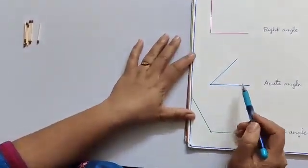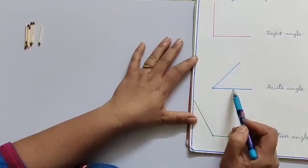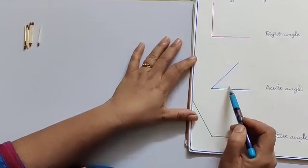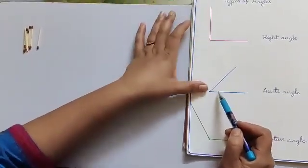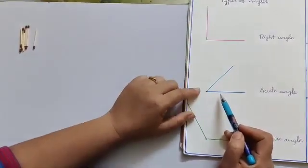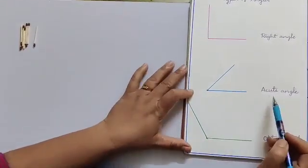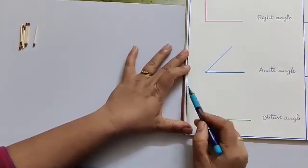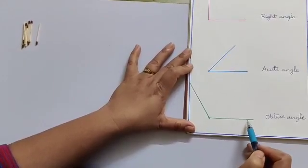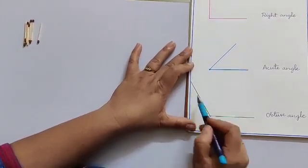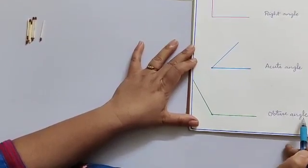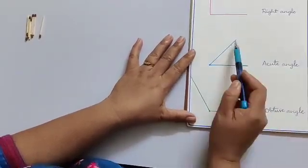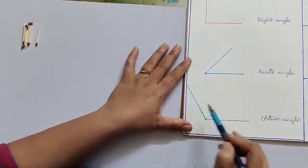And next, we have the acute angle. The angle which measures less than 90 degrees, smaller than the right angle, is known as acute angle. In the same way, the angle which is greater than the right angle, that is which measures more than 90 degrees, is known as obtuse angle. So children, there are three types of angles: right angle, acute angle, and obtuse angle.